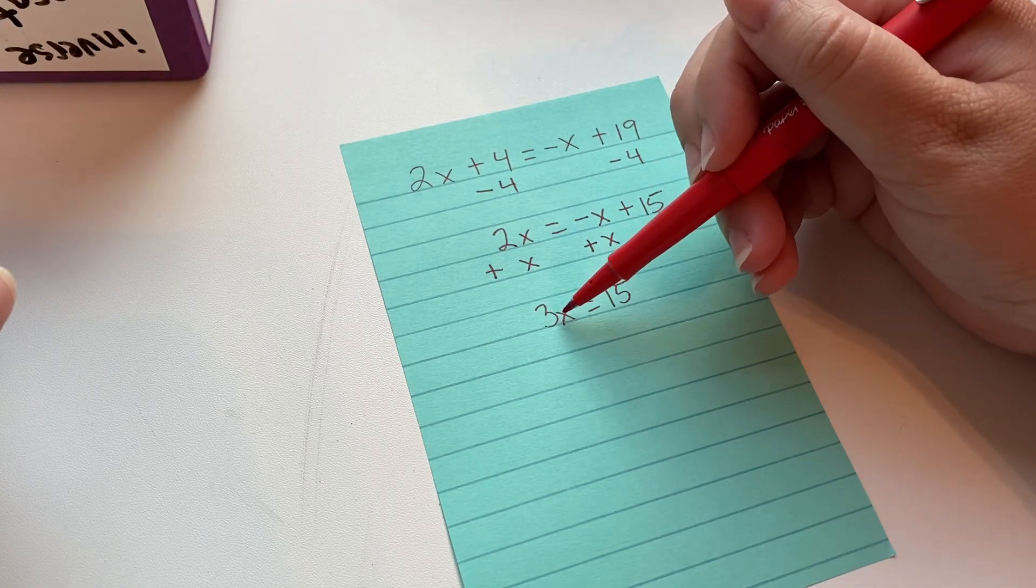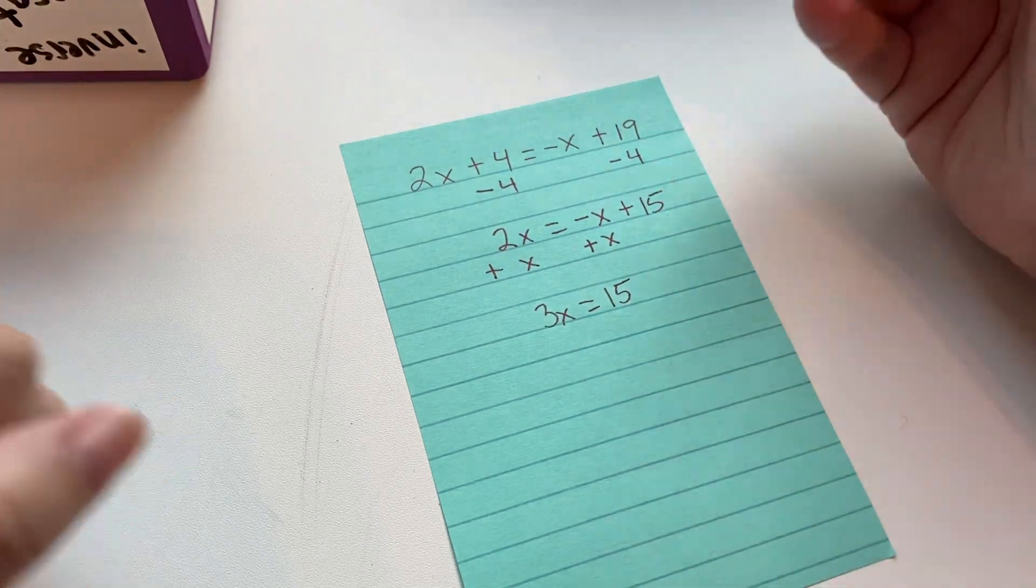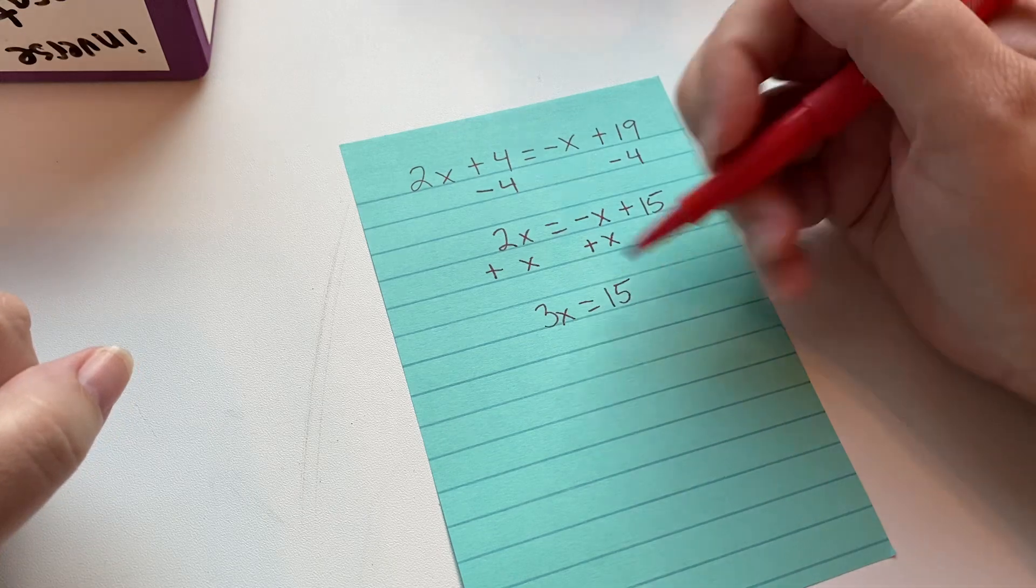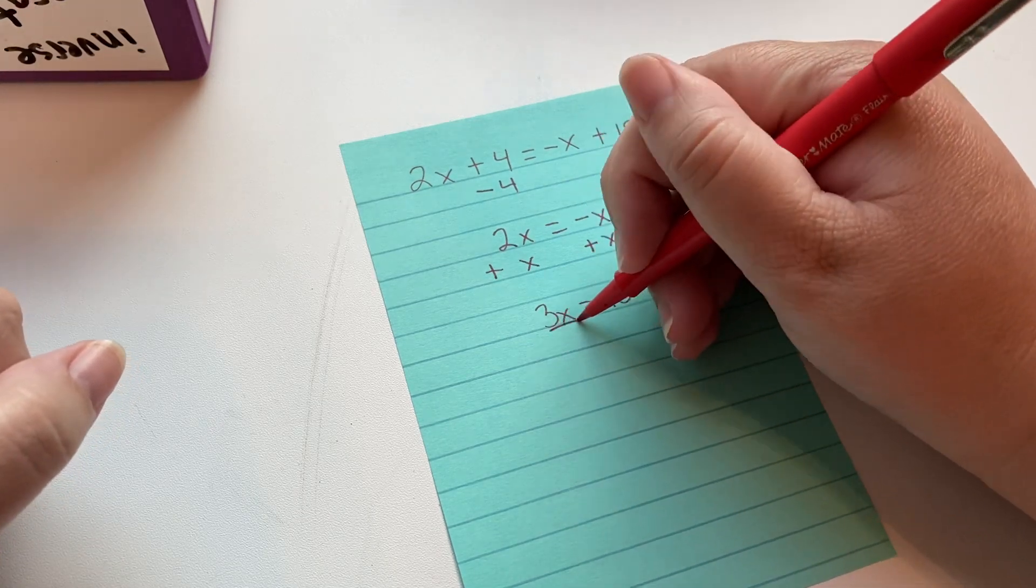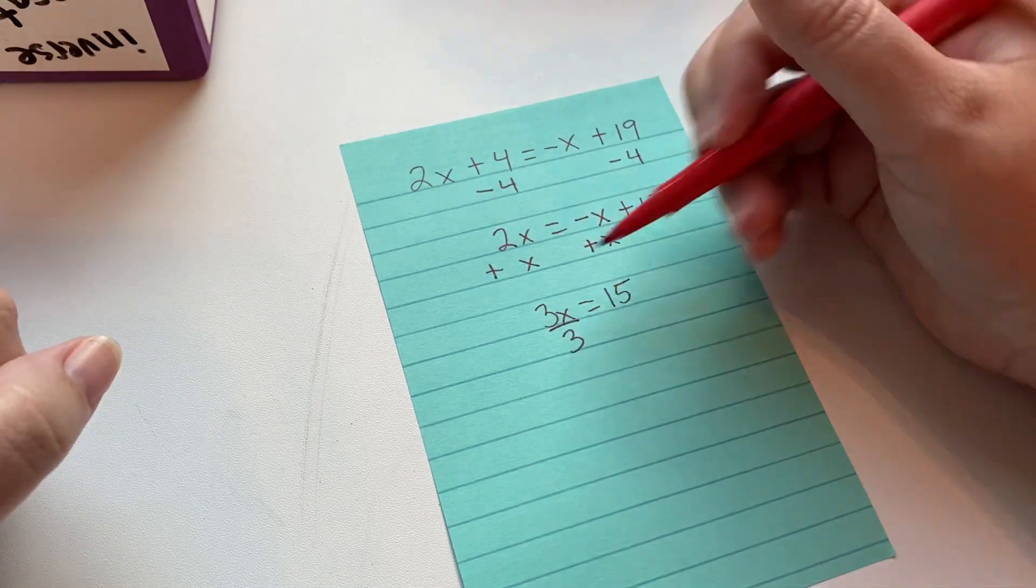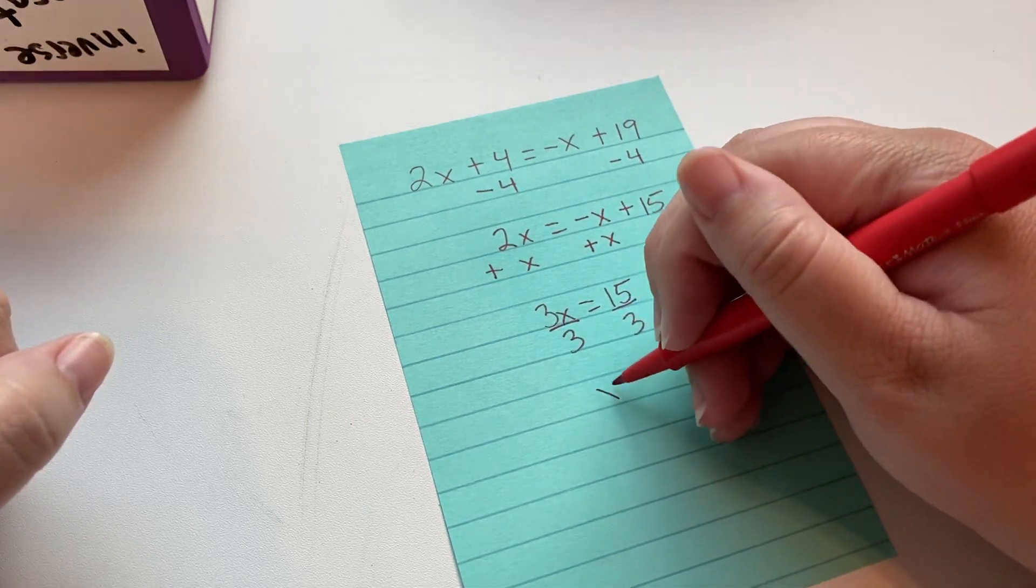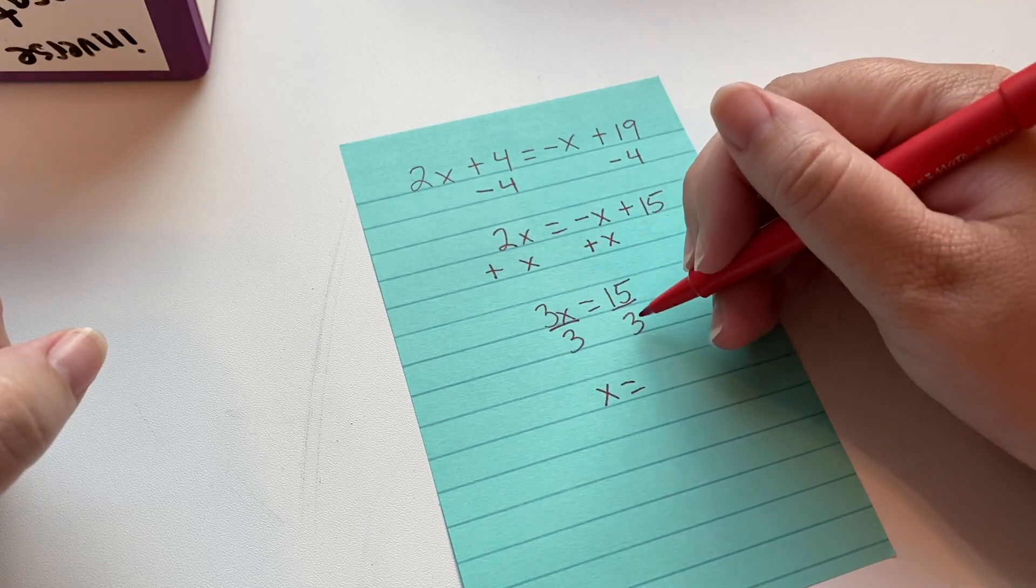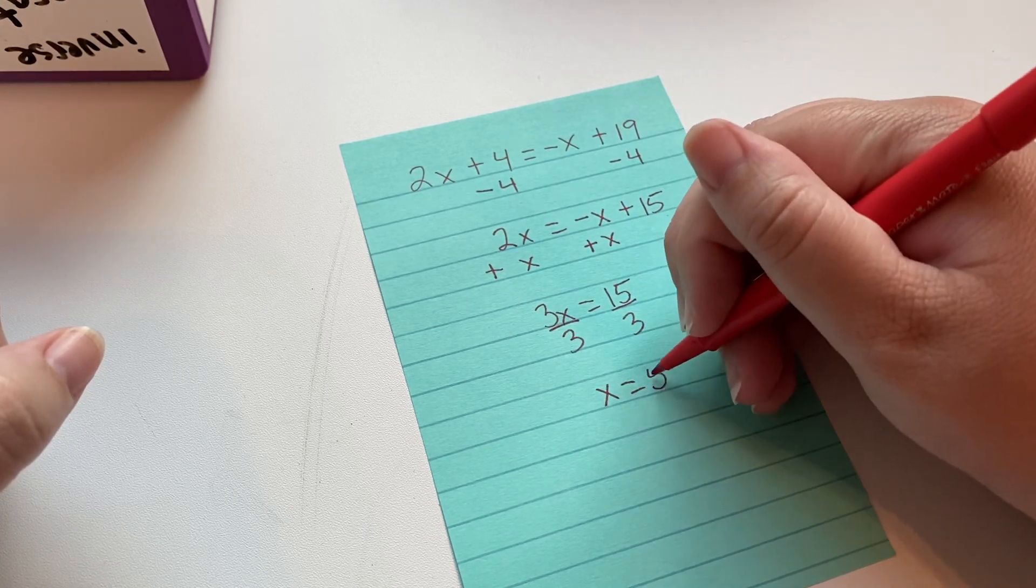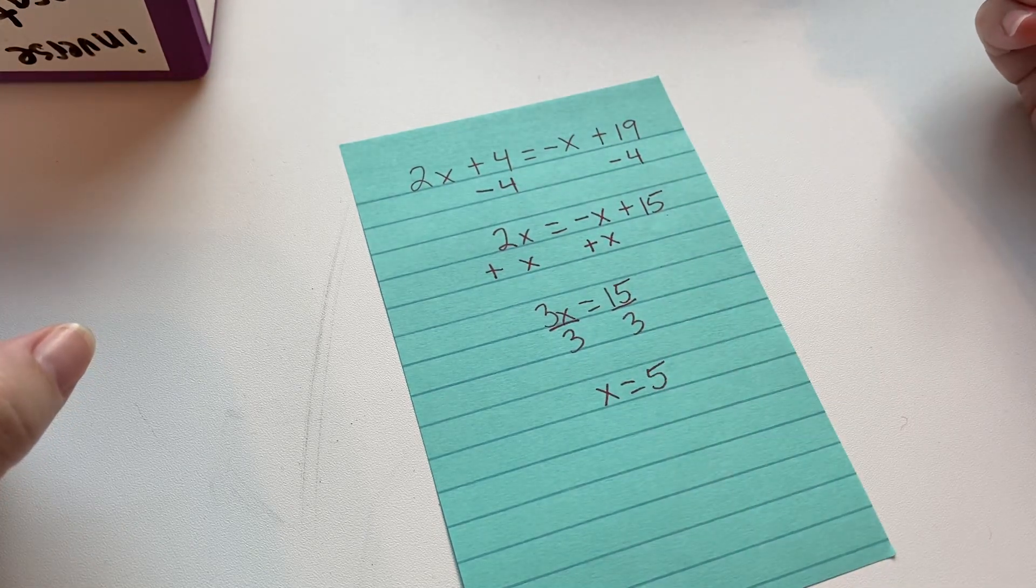Our last operation that we have to undo so that we can get x by itself to eliminate that 3 is we're going to divide by 3 because this is multiplying by 3. We have to do it to the other side to keep it balanced. 15 divided by 3 is 5.